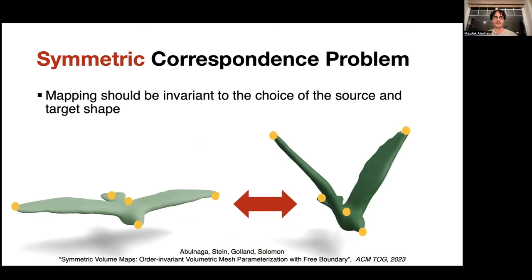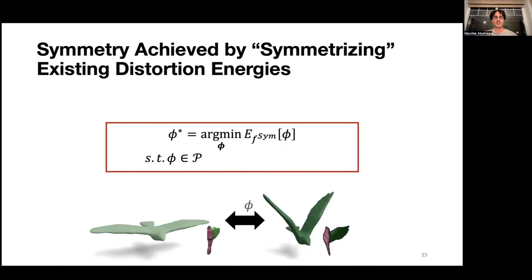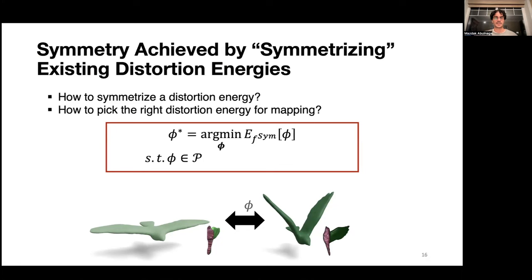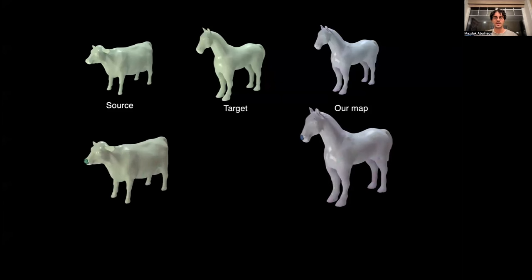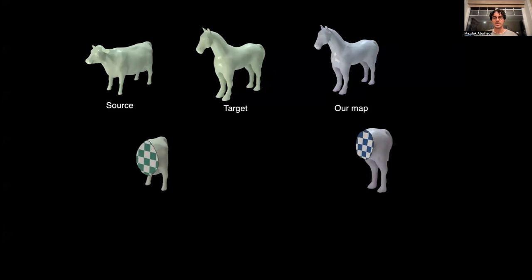We propose an optimization framework that uses a symmetrized energy eSIM to compute the map phi. In the paper, we perform careful analysis on how to symmetrize any existing distortion energy, for example, the as rigid as possible energy, as well as how to pick the right distortion energy for mapping to achieve the desired result. Using this framework, we're able to compute maps between highly dissimilar shapes, such as from this cow to this horse mesh. You can see our map in the right with interior checkerboards demonstrating low distortion.